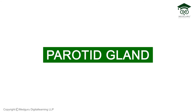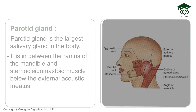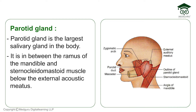In this video, we'll talk about the parotid gland. The parotid gland is the largest salivary gland in the body and it is between the ramus of the mandible and the sternocleidomastoid muscle, below the external acoustic meatus.